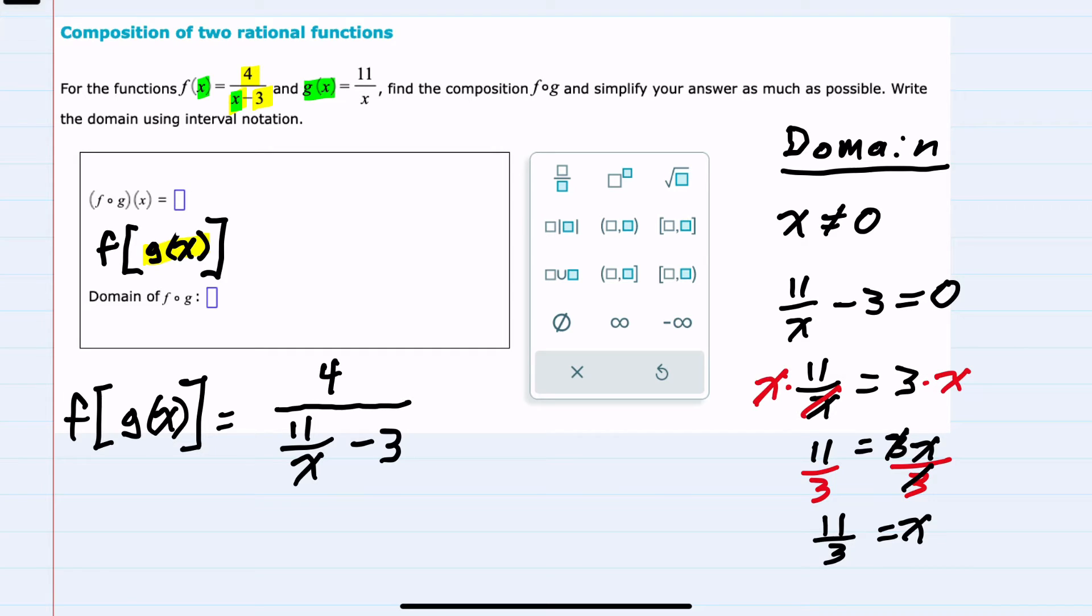This gives us a zero in the denominator, so x cannot be equal to 11 thirds. Our two limitations on the domain are that x cannot be equal to zero, x cannot be equal to 11 thirds.